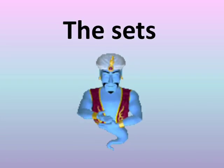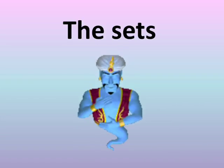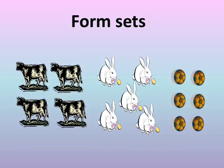Complete the lesson. The sets. Form sets. We have three sets: set of cows, set of rabbits, and set of bulls.